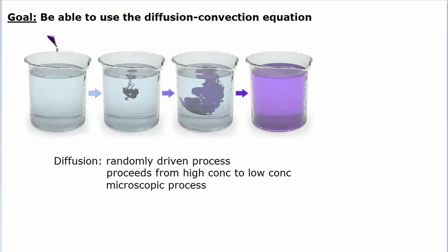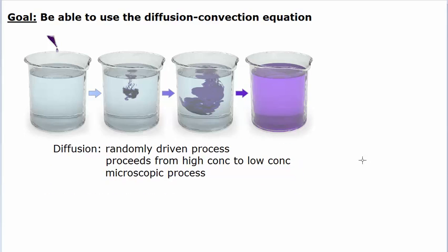Once the dye is all located in one spot, it's far more likely for the particles to move outward than inward, so they all start to randomly move outward until the randomness has equalized. The reason it looks homogeneous is that once all the particles have dispersed throughout the solution, there's no more propensity to move one way or another, and you just get a homogeneous distribution.